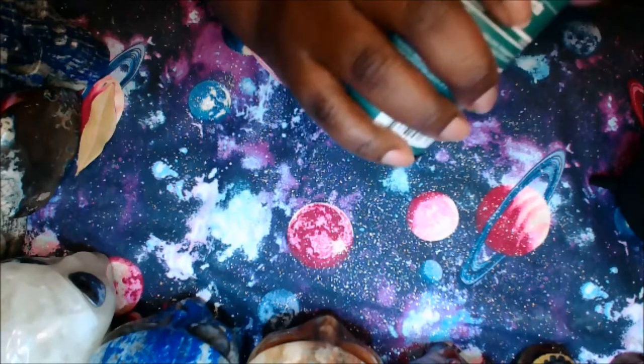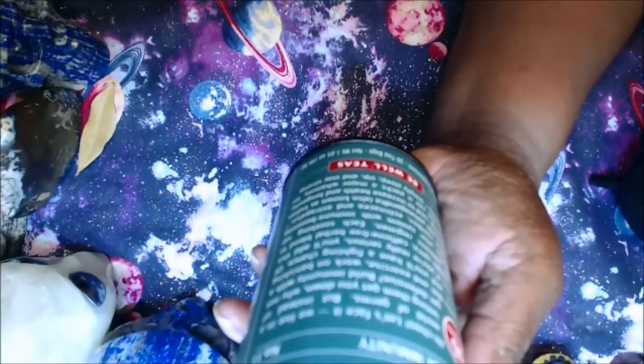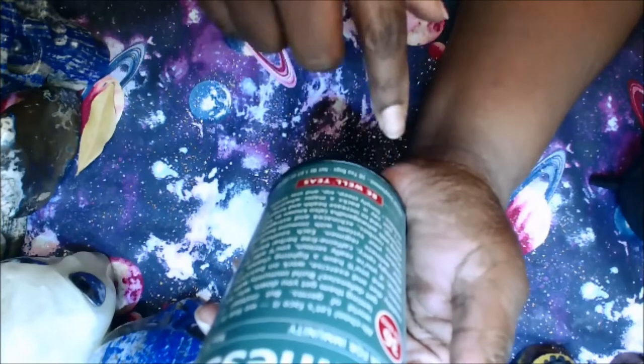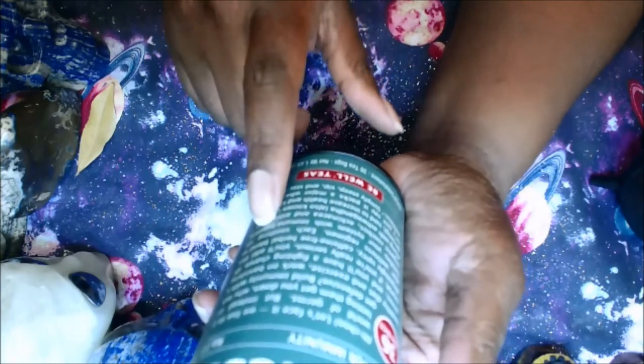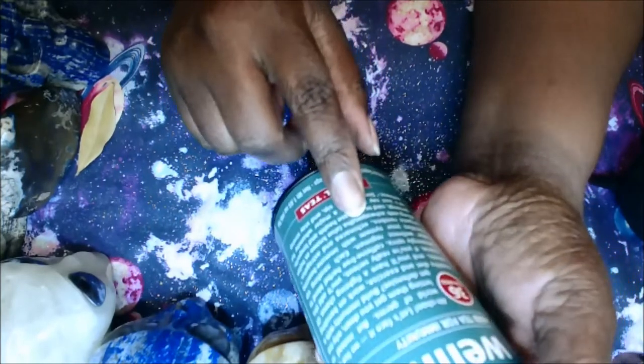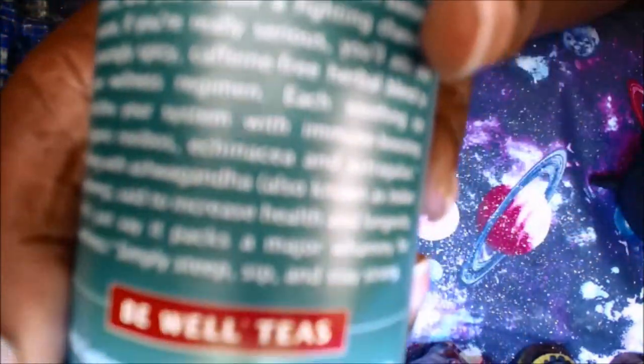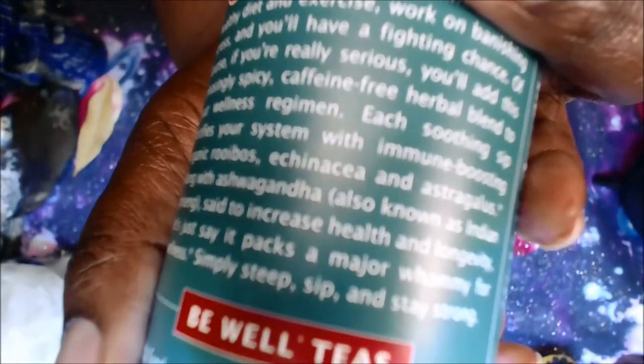Another thing you can do to improve your immunity and keep yourself healthy is drink this Get Wellness tea. It says build immunity with a healthy diet and exercise, work on banishing stress, and add this pleasantly spicy caffeine-free herbal blend to your wellness regimen. I drink this, it's super good. It's kind of spicy and super delicious, something to add to your daily regime in terms of building your immunity.